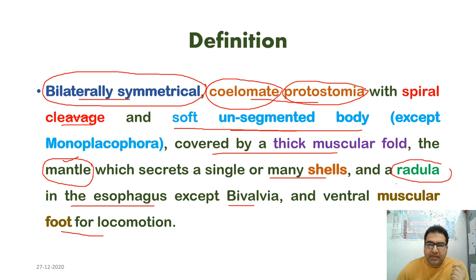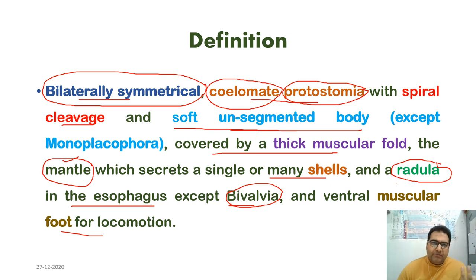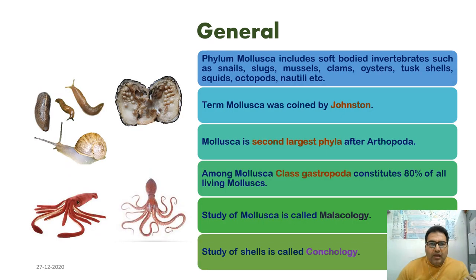The radula is a ribbon-shaped rasping organ located in the esophagus, absent in Bivalvia. The ventral muscular foot is also a unique feature of mollusks, adapted for different activities such as creeping, burrowing, sweeping, swimming, and leaping.